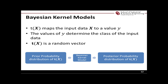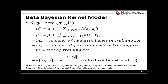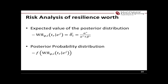Since the resilience worth is a value between 0 and 1, it would be appropriate to model this metric using the Beta Bayesian kernel model. The resulting posterior follows the beta distribution, with posterior parameters alpha star and beta star that are a function of the prior parameters. The model has been tested using several data sets, proving a good level of accuracy and fast computation time. The probabilistic output is the main benefit of using this model. One possibility is to base the risk analysis on a point estimate, such as the expected value of the posterior distribution, and examine the resilience worth of a component based on this estimate. The larger the estimate is, the more impactful is the component.